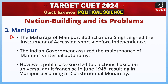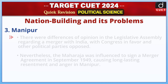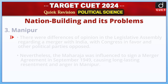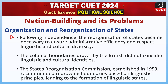The Maharaja of Manipur, Bodhachandra Singh, signed the Instrument of Accession shortly before independence. The Indian government assured the maintenance of Manipur's internal autonomy. However, public pressure led to elections based on universal adult franchise in June 1948, resulting in Manipur becoming a constitutional monarchy. There were differences of opinion in the Legislative Assembly regarding a merger with India, with Congress in favor and other political parties opposed. Nevertheless, the Maharaja was influenced to sign a merger agreement in September 1949, causing long-lasting resentment and anger in Manipur.